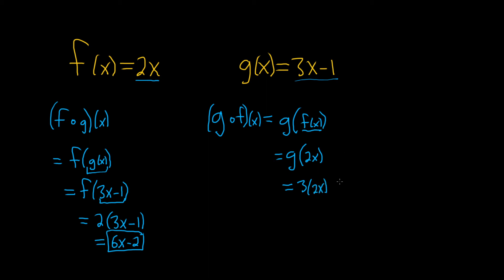And then we still have the minus 1. So here it's 3x minus 1. Here it's 3, 2x minus 1. The last thing to do is maybe distribute the 3 here, or rather multiply. 3 times 2 is 6. So we have 6x minus 1. And that would be the other composition.